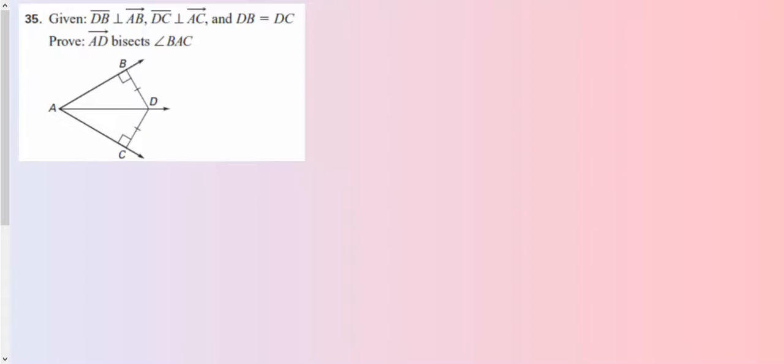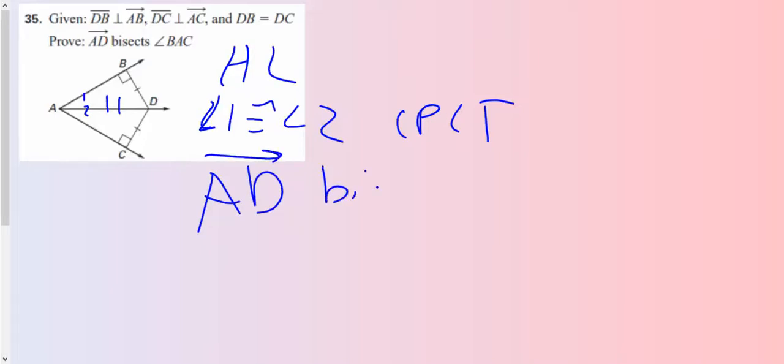And then this one here to show that AD bisects BAC. Again, you have right angles there. You have BD is congruent to DC. You have a reflexive side here. So this one's HL. Then you state that angle 1 is congruent to angle 2 by CPCTC. And then that makes AD the bisector of BAC.